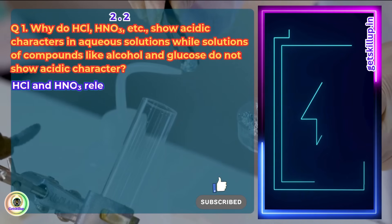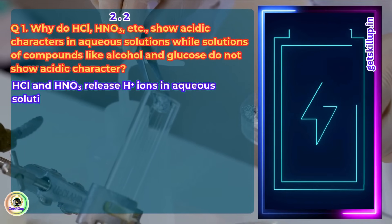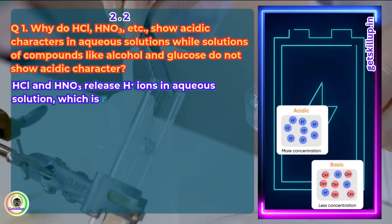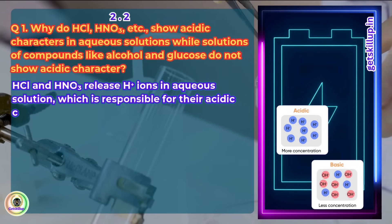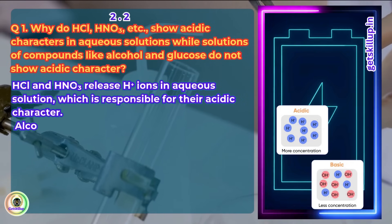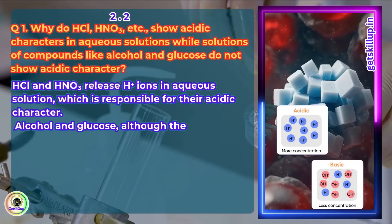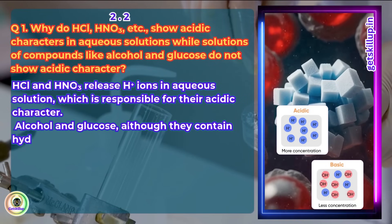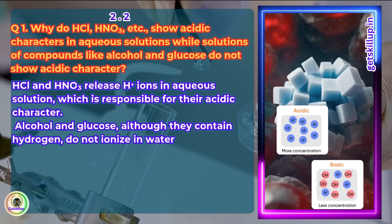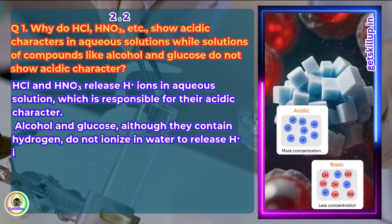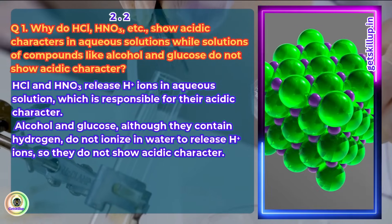HCl and HNO3 release H+ ions in aqueous solution, which is responsible for their acidic character. Alcohol and glucose, although they contain hydrogen, do not ionize in water to release H+ ions, so they do not show acidic character.